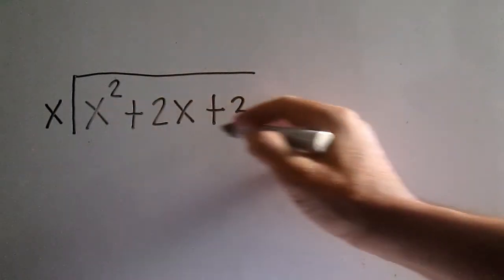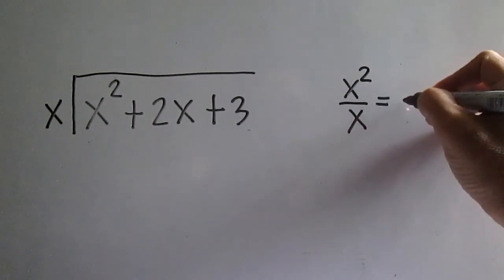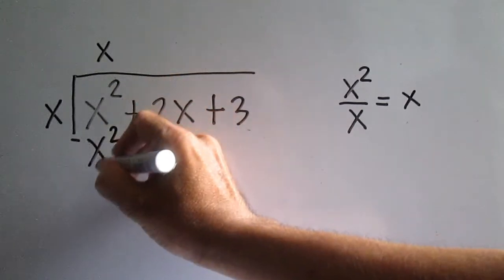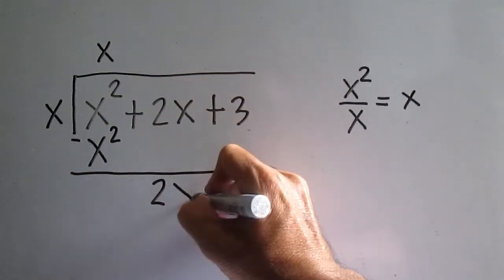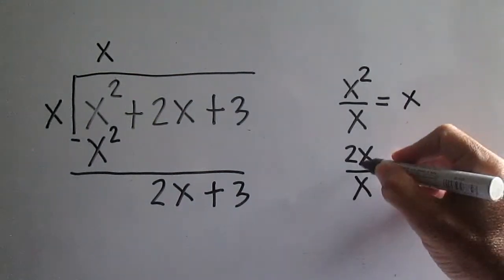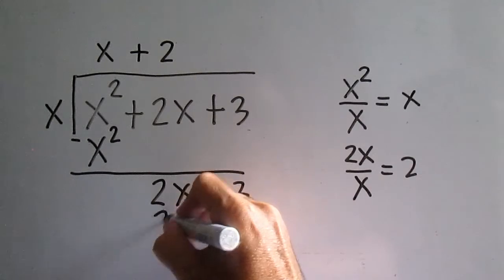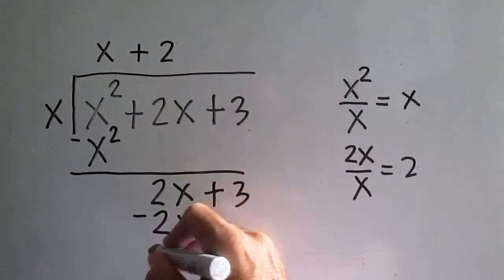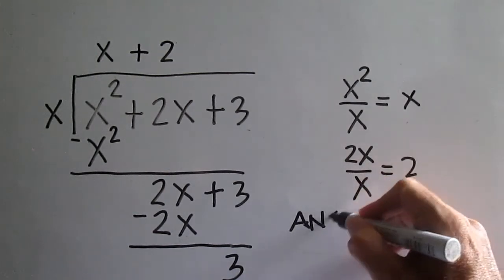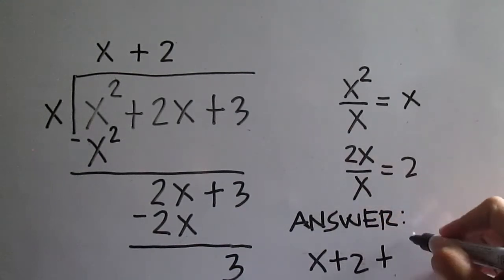Divide x squared plus 2x plus 3 by x. Divide the first term of the numerator by the denominator: x squared divided by x is x. Write the answer. x times x is x squared. Subtract — this is 0. Bring down 2x plus 3. Divide 2x by x: 2x divided by x is 2. Write 2. Multiply: 2 times x is 2x. Subtract: 2x minus 2x is 0. Bring down 3. The remainder is 3, and the final answer is x plus 2 plus 3 over x.